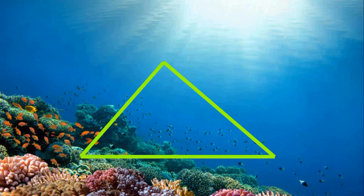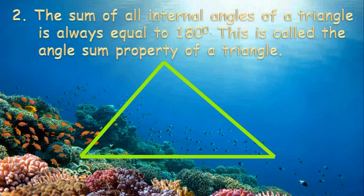Next is the sum of all internal angles of a triangle is always equal to 180 degrees. This is called the angle sum property of a triangle.